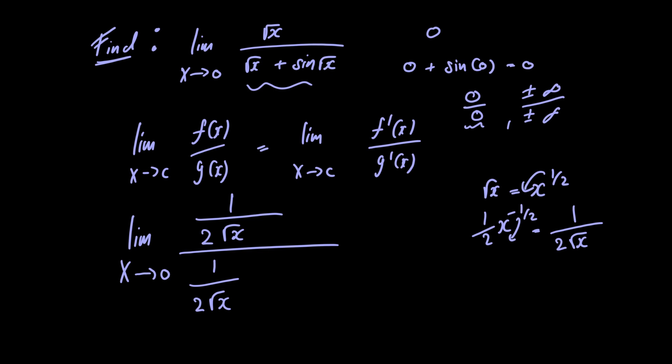We take the derivative of the outside part, then the inside part, and multiply them together. This gives us cos(√x) multiplied by 1/(2√x).